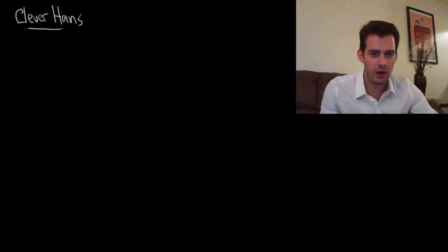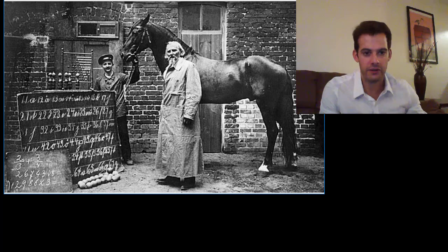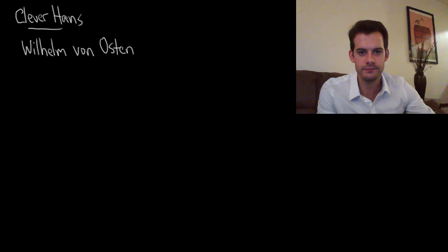Now Clever Hans was owned and trained by a guy named Wilhelm von Osten. And here's a picture of Wilhelm von Osten with Clever Hans standing behind him. And von Osten took Clever Hans all around Germany, giving performances and demonstrations, and many people were convinced that Hans really was this clever.